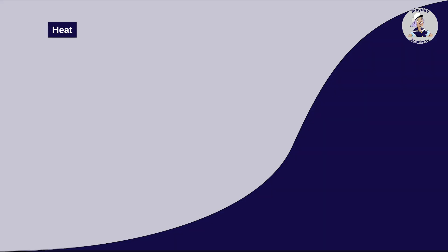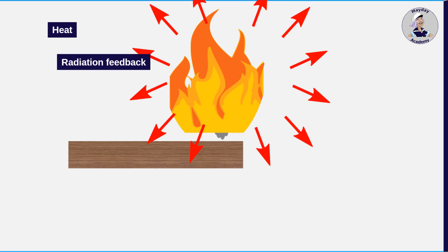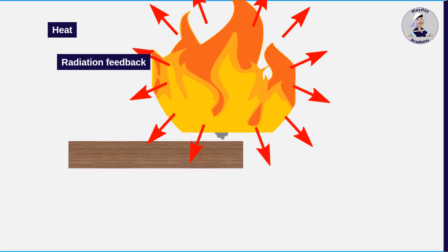Heat. A self-sustaining combustion reaction of solids and liquids depends on radiation feedback. The fire itself provides heat energy for the continued vapor generation to maintain combustion. If the fire generates enough heat to maintain or amplify this feedback, the fire either remains constant or grows.